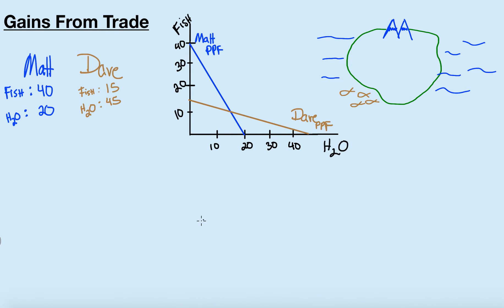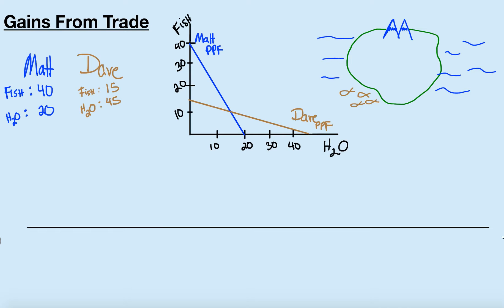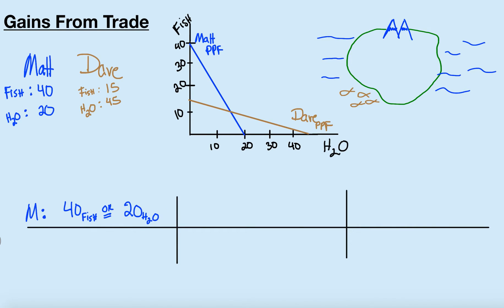The easiest way, in my opinion, to find this out is if we start off by putting all of the information in rows and columns. We're going to set a table up to show the difference between absolute advantage and comparative advantage. We'll put Matt on top — Matt can produce 40 fish or 20 units of water. Dave, on the other hand, can produce 15 units of fish or 45 units of water.